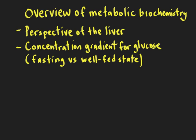The best way to think about metabolic biochemistry reactions from the early stages is to start really big — start with the liver, since that's one of the most important organs in the body where you have a lot of different metabolic reactions integrated together, and then think about fasting and the well-fed state. Once you do that, you can zoom in on individual reactions and think about more detailed elements like different reaction steps and enzyme regulation.